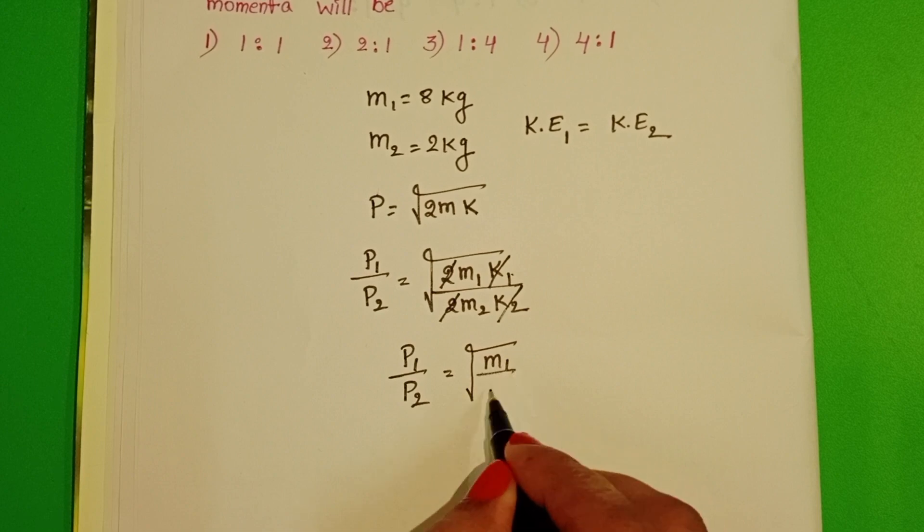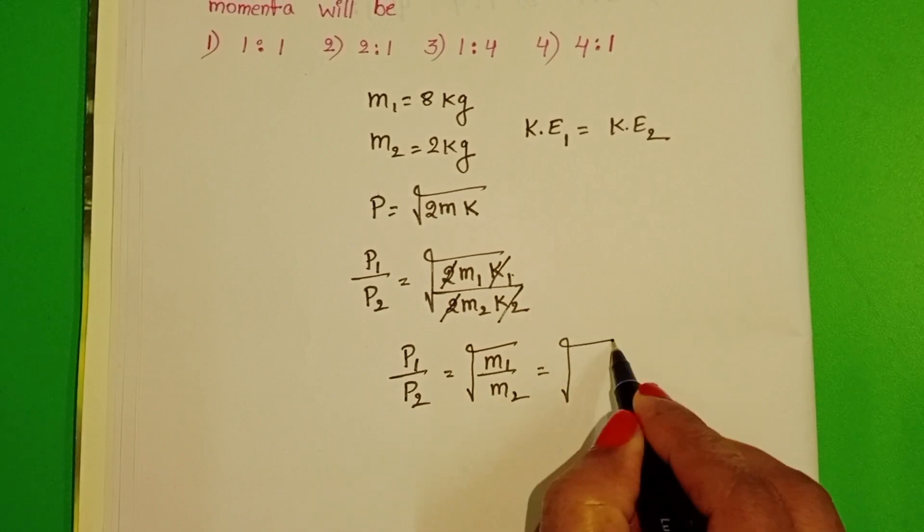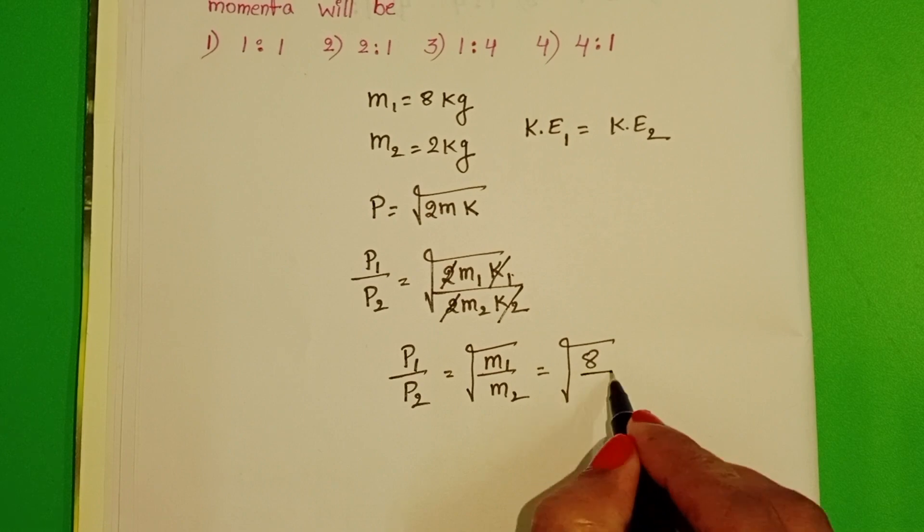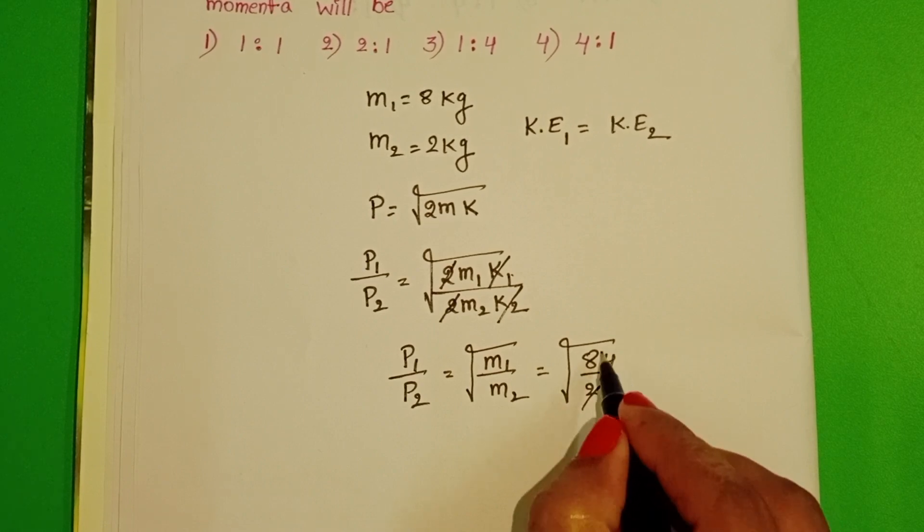equals square root of m₁/m₂. Substitute the masses: 8/2 = 4, so √4 = 2.